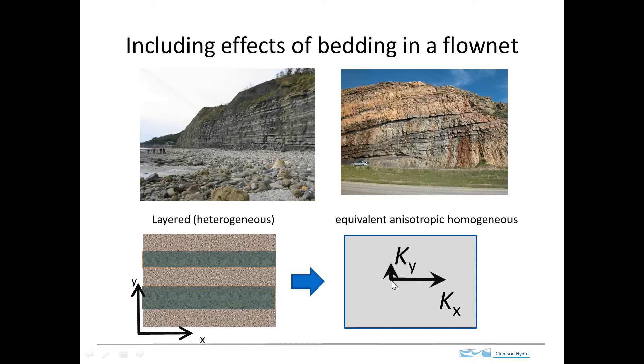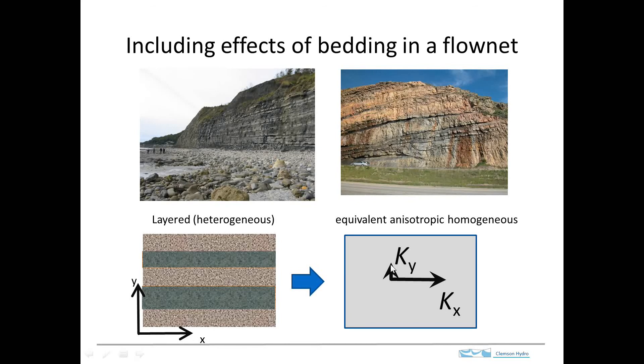So the hydraulic conductivity in the x direction is greater than in the y direction. This is a heterogeneous material because the hydraulic conductivity varies with space, but this is a homogeneous material because the hydraulic conductivity is uniform, but it's anisotropic because the hydraulic conductivity varies with direction.